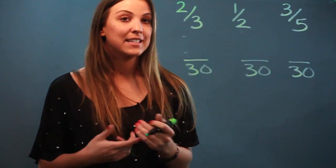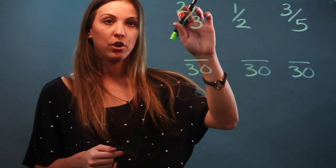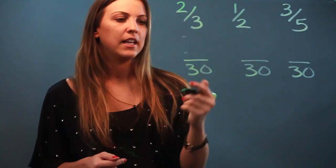So how did I get from three to 30? I did times 10, so now I'm going to have to do the numerator times 10. So two times 10 is 20.